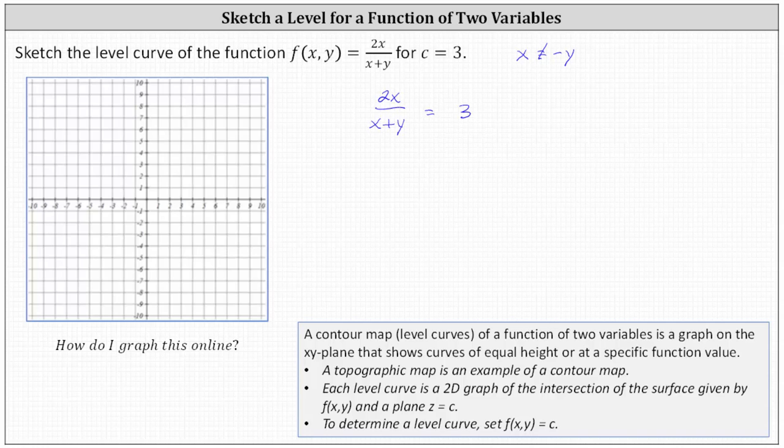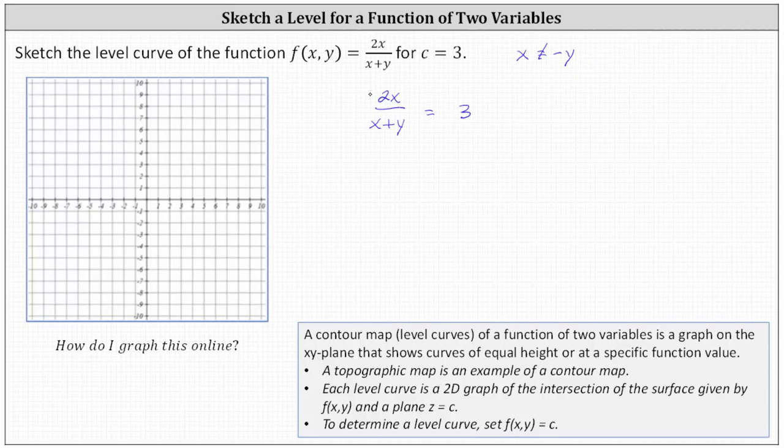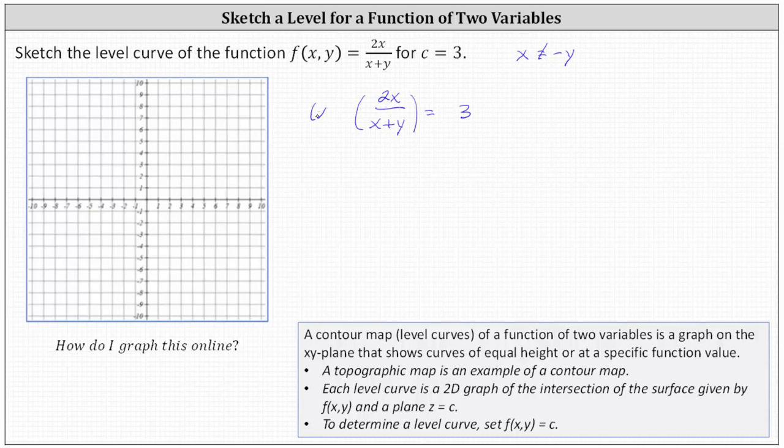And now let's go ahead and solve the equation for y. Remember the level curves looked linear. So we'll multiply both sides by the quantity x plus y. Simplifying on the left, x plus y divided by itself simplifies to one, leaving us with 2x equals on the right. Distributing the three, we have 3x plus 3y.